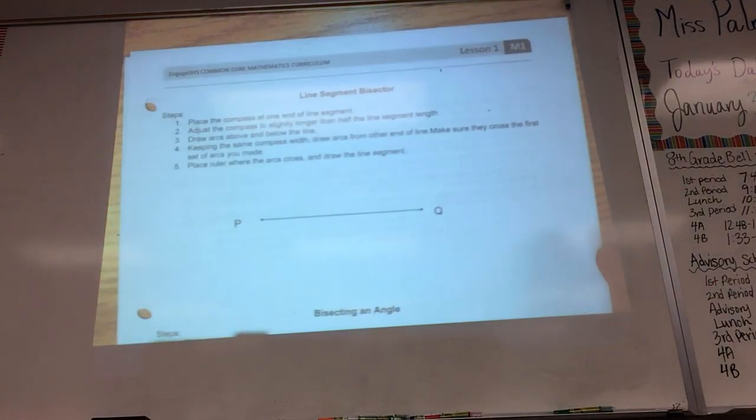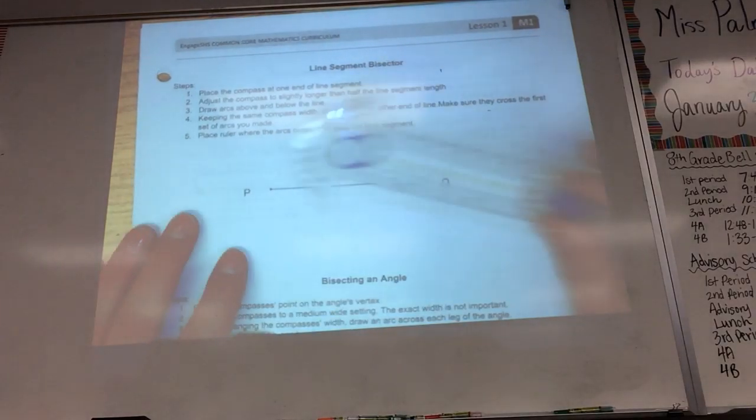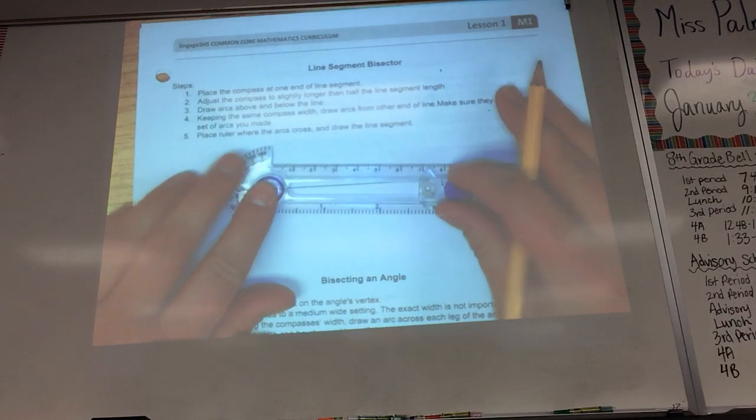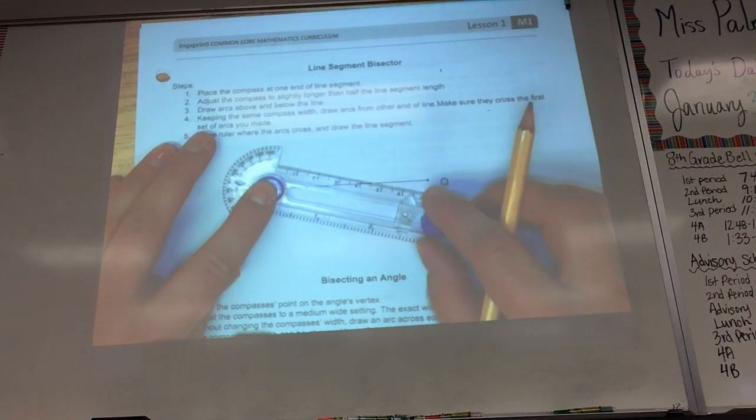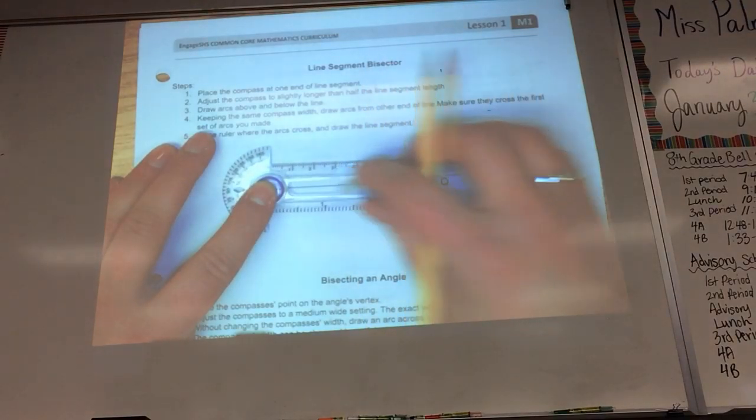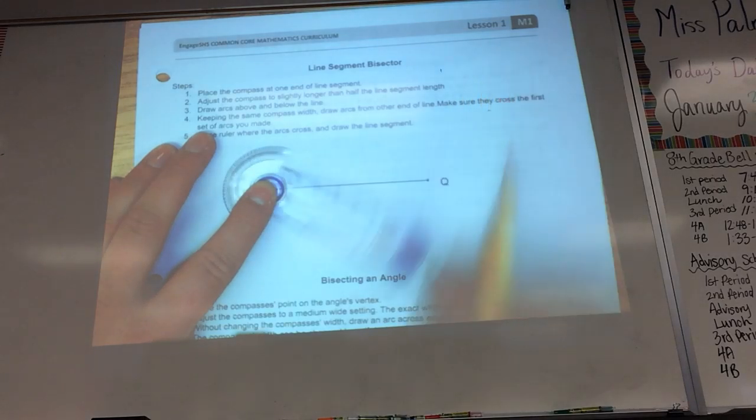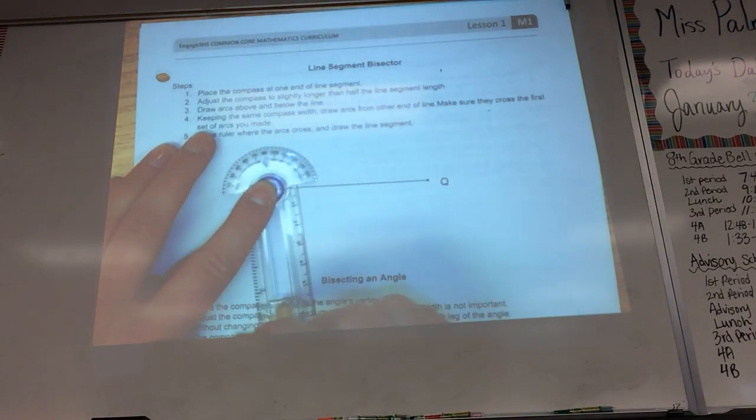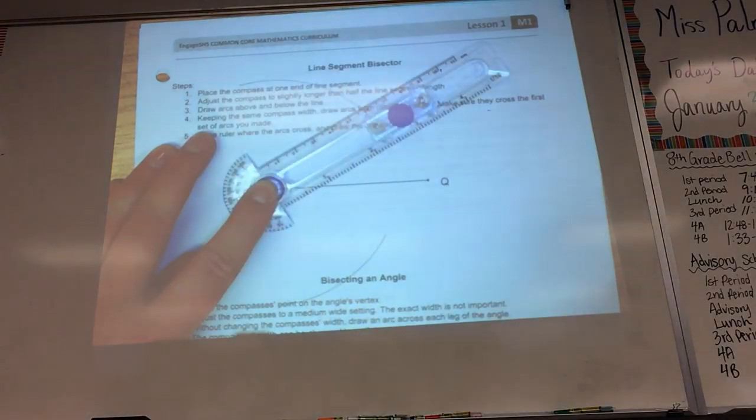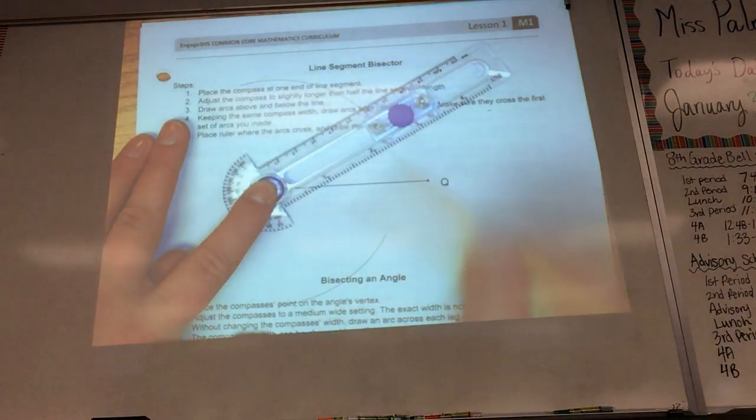Line segment bisector. So this one and the perpendicular lines are the ones that are a little more challenging. Alright, here we go. So as long as I set my compass a little more than halfway, this is about half. I go a little more than half. Because if I don't go more than half, it won't cross. And I'm going to do an arc at the bottom, and I'm going to do an arc at the top.